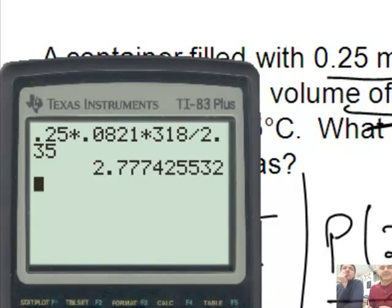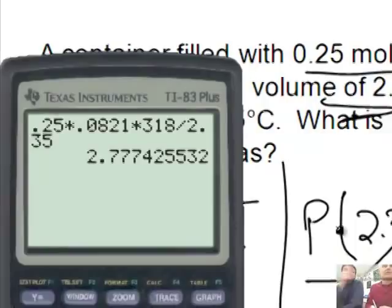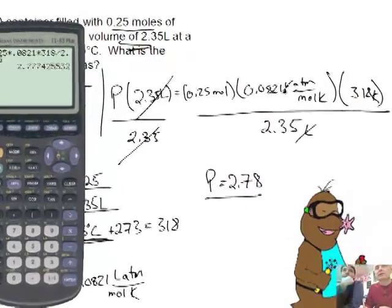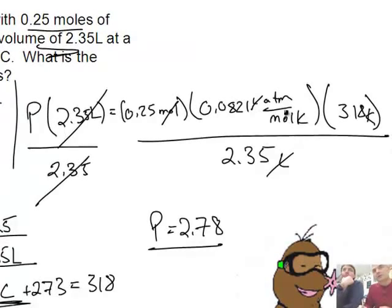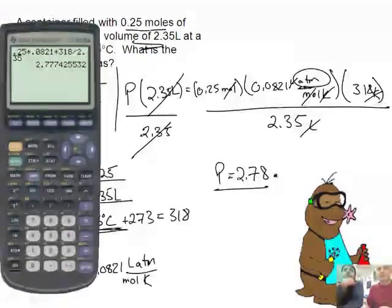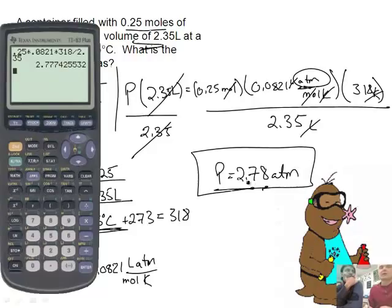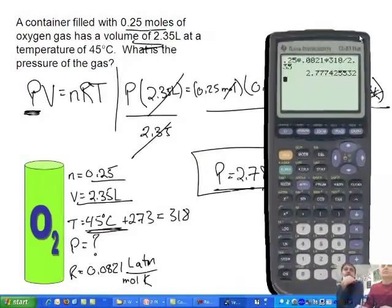So the pressure is 2.78. So what would the units on that be? Well, let's cancel them out up in the top and figure it out. All right, so the liters cancel here and here. We've got moles here and here. That cancels and my Kelvin is here and that cancels and that leaves us with atmospheres. Atmospheres, yeah. There it is. And that's because if you're using this equation, typically pressure will be in atmospheres.